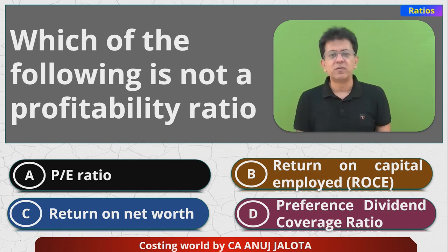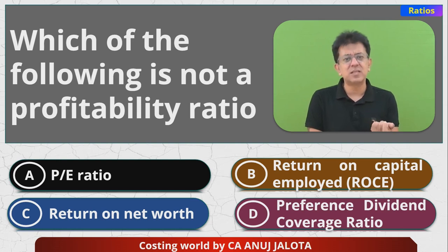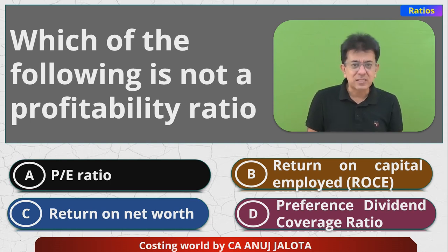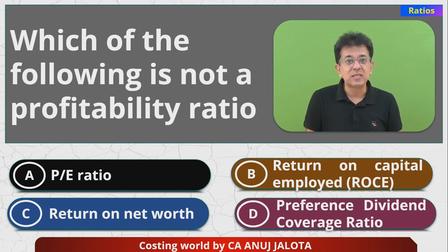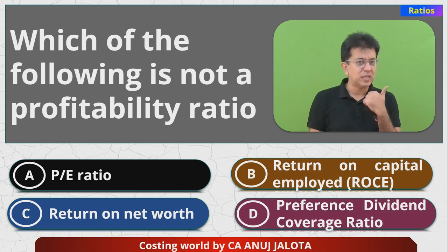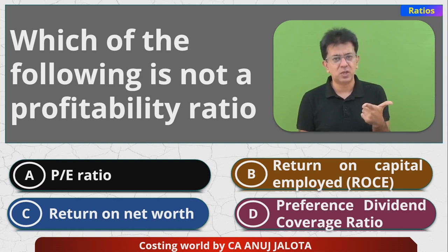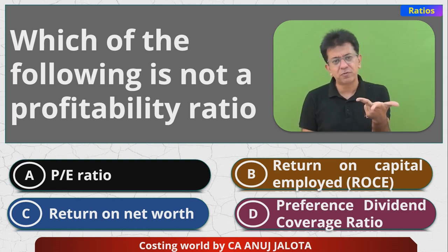Return on Net Worth is nothing but your profits divided by your net worth. Your net worth is fixed assets plus working capital in this case. Lastly, option D is Preference Dividend Coverage Ratio. A is a profitability ratio, B and C also talk of profits only.